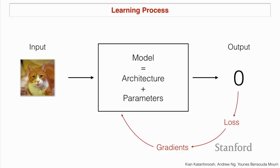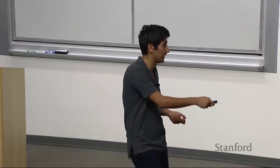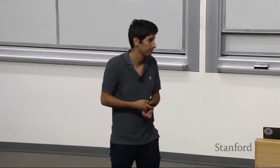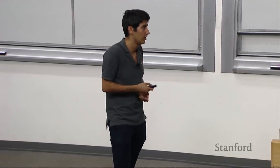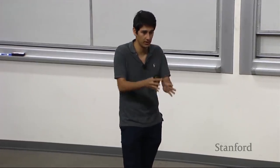If you give this cat and forward propagate it through the model, you get an output. You then compare this output to the ground truth. The function used to do so is called the loss function — you've seen an example, the logistic loss function. Computing the gradient of this loss function tells you how much to move your parameters in order to make the loss go down, making the function recognize cats better. You do that many times until you find the right parameters to plug into your architecture.